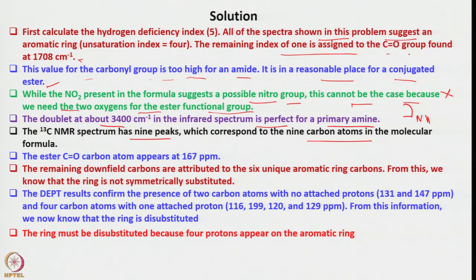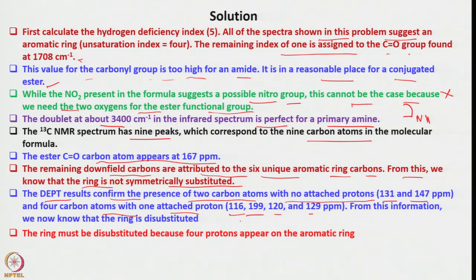NO2 is therefore ruled out. A doublet around 3400 cm⁻¹ in the infrared spectrum is characteristic of a primary amine NH stretch, suggesting NH2 is present. The 13C NMR spectrum has 9 peaks, corresponding to 9 unique carbon atoms. The ester carbonyl carbon appears at 167 ppm. The remaining downfield carbons are attributed to 6 unique aromatic ring carbons, indicating the ring is not symmetrically substituted. DEPT results confirm 2 carbons with no attached protons and 4 aromatic CH units — so the ring is disubstituted.